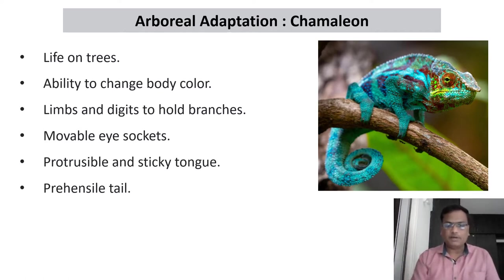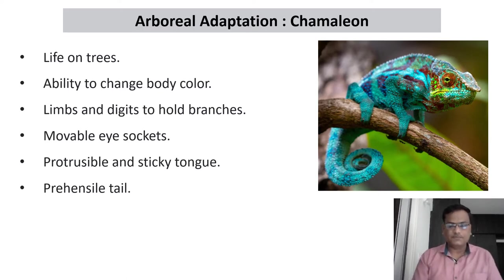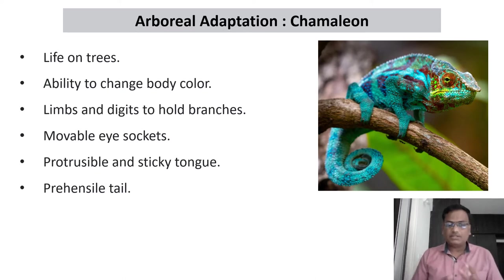So they have well-developed arboreal adaptations. Life on trees has some specific challenges. One is the animal has to sit or move on the branches, which are comparatively smaller — you cannot expect the stability of the land on the tree. So the animals must have the adaptation to hold tightly to the branches.